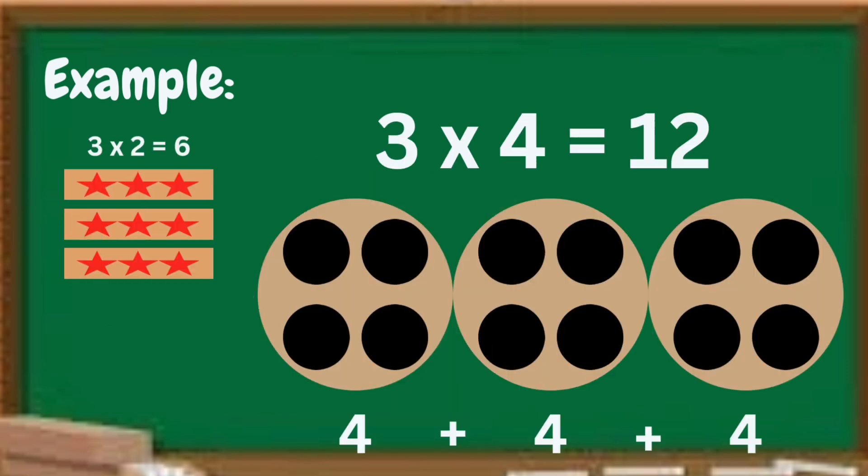Let us have another example. 3 times 4 equals 12. We have here 3 circles, and in each circle there are 4 black dots, and all we have to do is add all of it so we can get our product. 4 plus 4 equals 8, and 8 plus 4 equals 12. Good job, children! 3 times 4 equals 12.